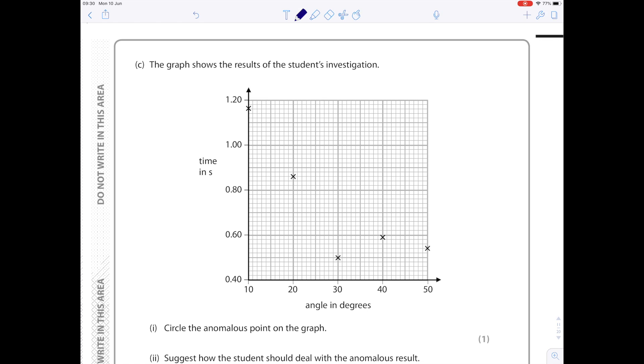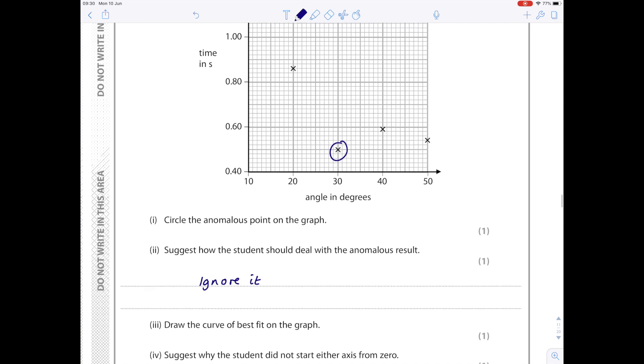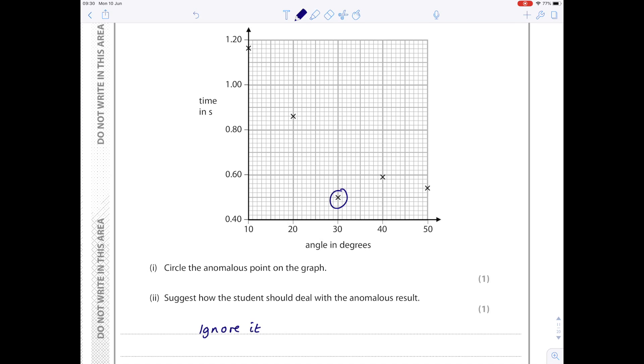The graph shows the results of the student's investigation. Circle the anomalous point on the graph. Which one doesn't fit the trend? Well, it's this one. Suggest how the student should deal with the anomalous result. They should ignore it and then probably repeat it.